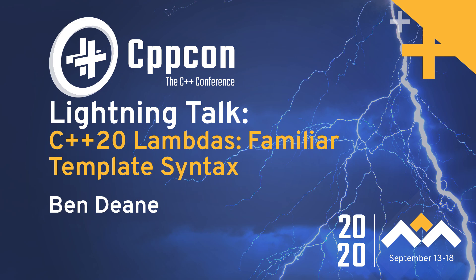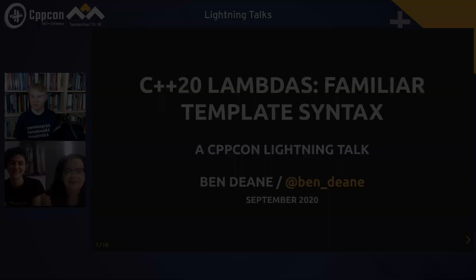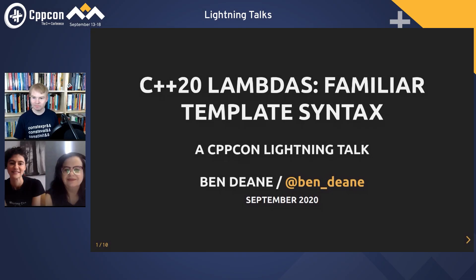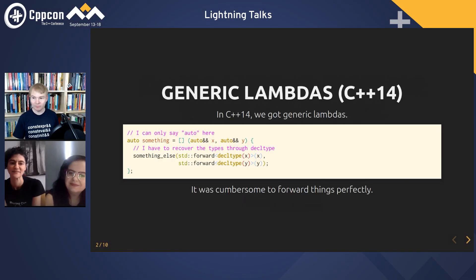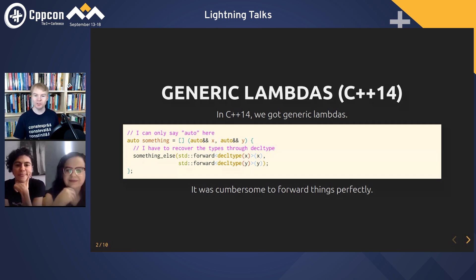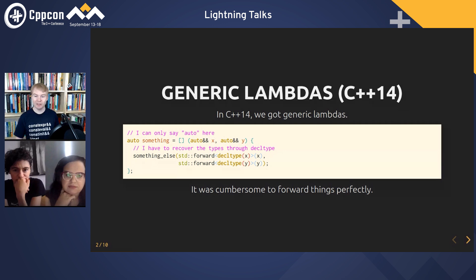I wanted to highlight a little thing about C++20 lambdas. In C++14, we got generic lambdas, which allows us to template the lambda, but we only get to say auto in the function signature, and we have to deal with the value categories in this weird way by decltype, and it was cumbersome.